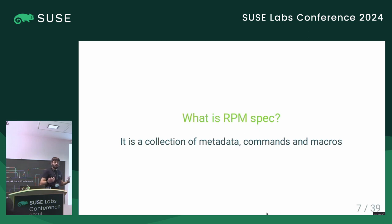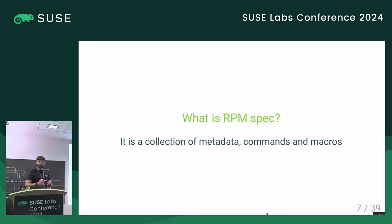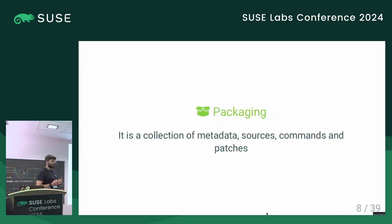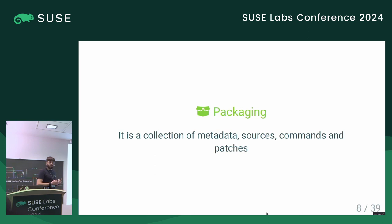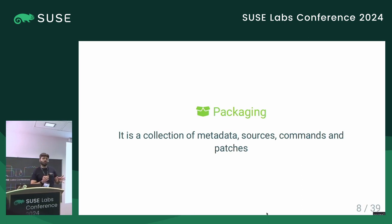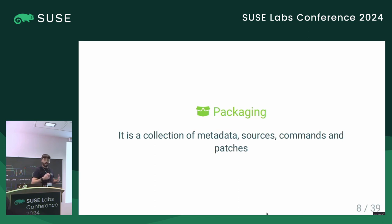How can we summarize the RPM spec we just saw? At least in my opinion, an RPM spec is just a collection of metadata, commands, and macros. And if we take a step back, a package is just a collection of metadata, sources, commands, and patches. At the end, all distributions do the same thing, just in a different way — slightly different commands, different patches. For example, Alpine Linux has a lot of patches for musl.